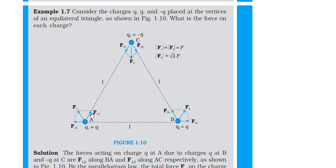Now if you look at any force — F13, F12, F21, F23, F32, F31 — all these forces are the same in magnitude. Because if you look at each pair of charges under Coulomb's Law, the charges are the same and the distance between any two charges, L, is the same — it is the side length of the equilateral triangle.